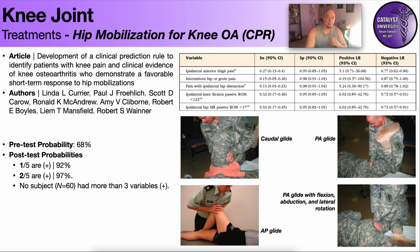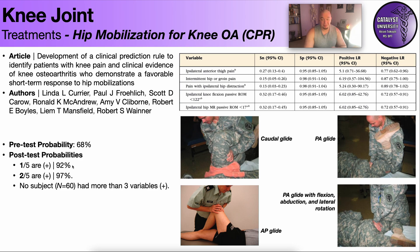A couple of these that are very commonly positive are limited hip internal rotation — some people, particularly men, have a significant limitation in this hip mobility — and also passive knee flexion range of motion being limited, especially when the arthritis is fairly advanced. You only need one, and it jumps the probability of success to 92%. If two are positive, the probability jumps up to 97%, so it is definitely in your interest to perform hip mobilizations.